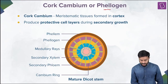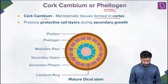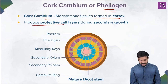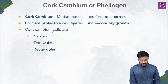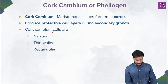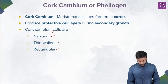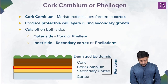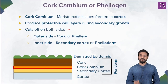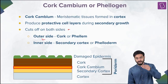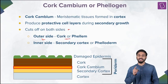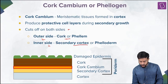The cork cambium, or phelogen, is a meristematic tissue formed in the cortex. It produces protective cell layers during secondary growth. The cells of the cork cambium are narrow, thin-walled, and rectangular. It cuts off on both sides — the outer side forms the cork or phellem, and the inner side forms the secondary cortex or pheloderm.